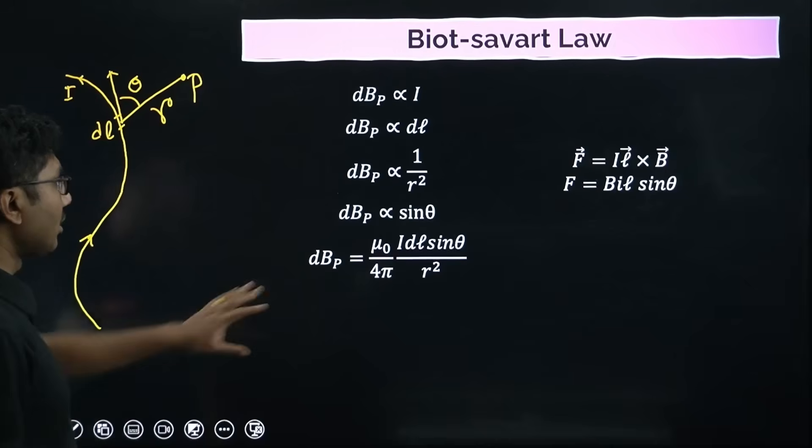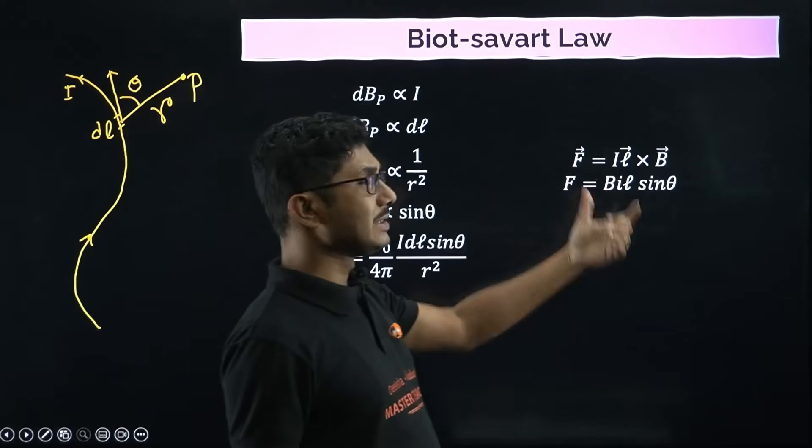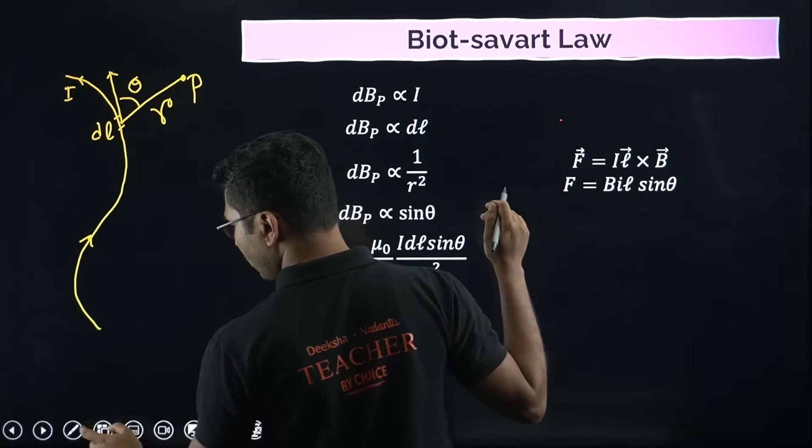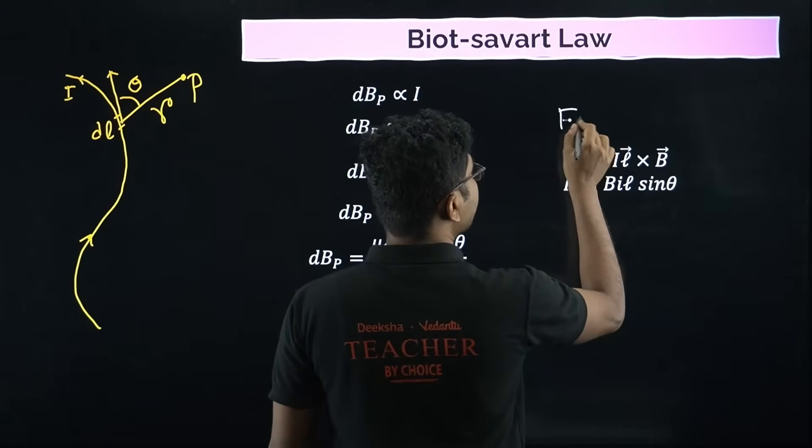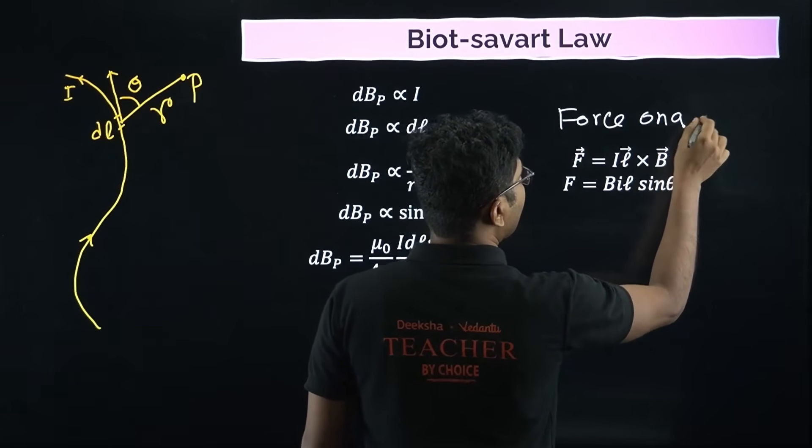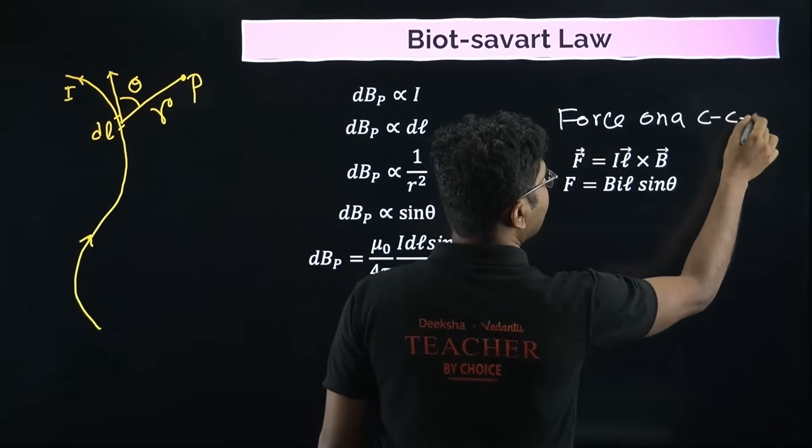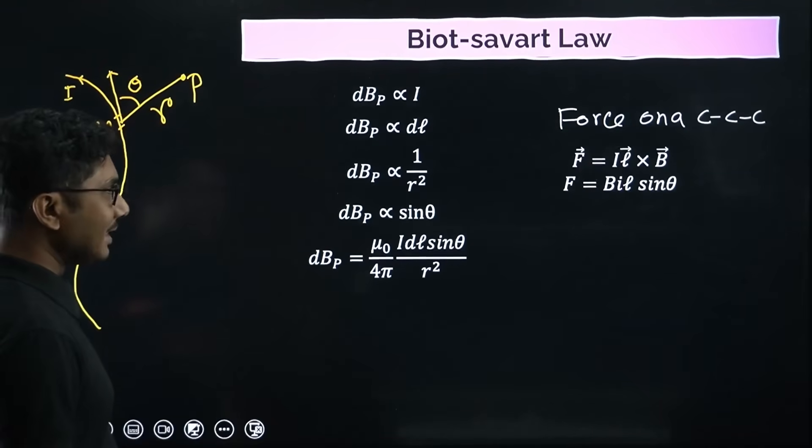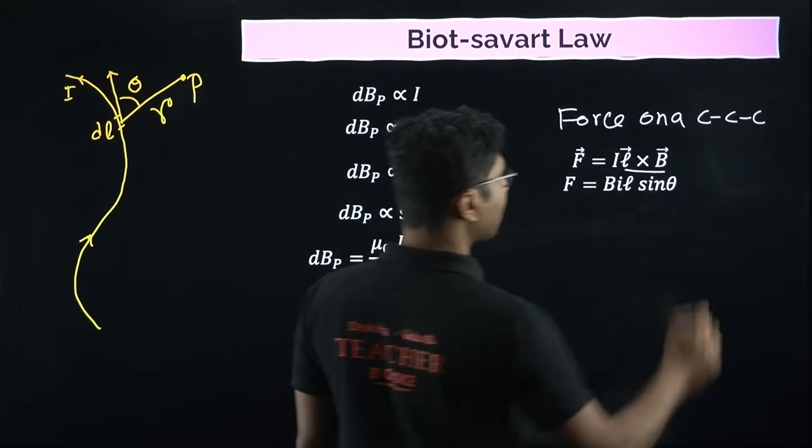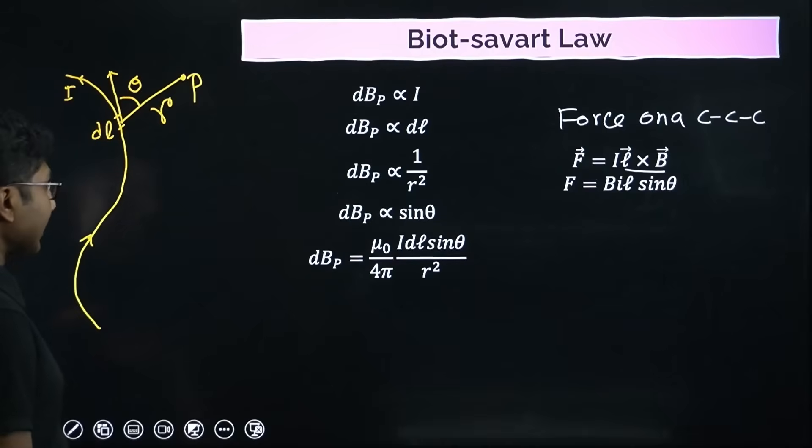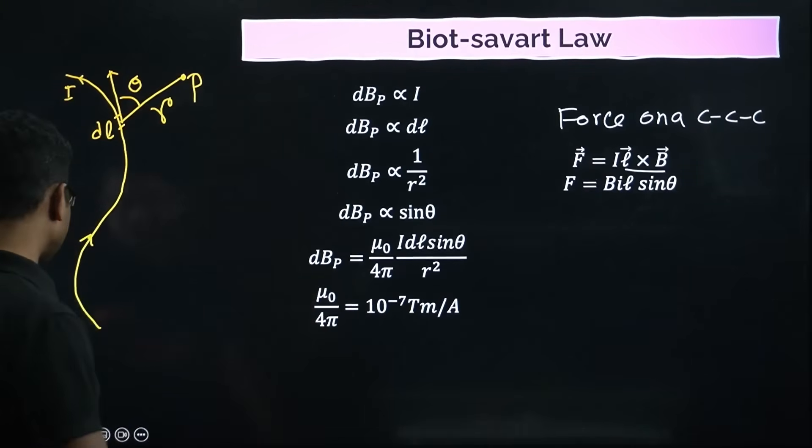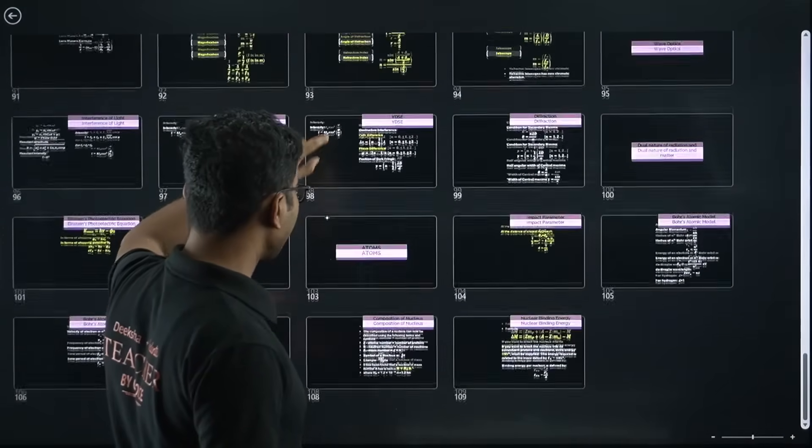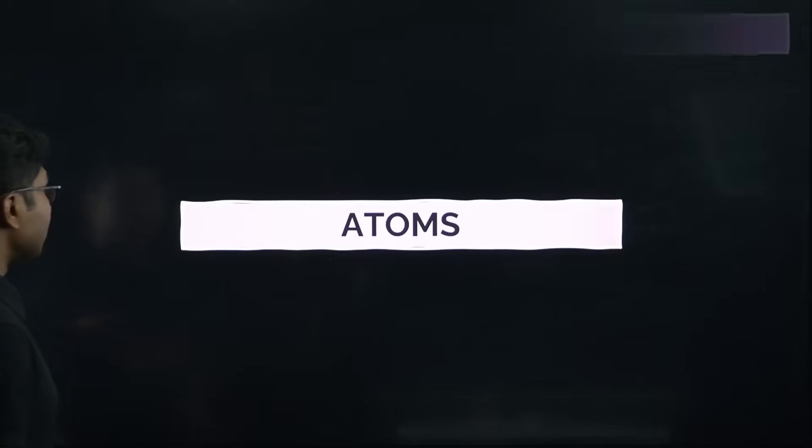We have Biot-Savart's law. What is the force acting on a current carrying conductor - this is also provided. Force on a current carrying conductor is BiL. You have to remember it is L cross B, not B cross L. This is very, very important. All the formulas, concepts, equations are there.